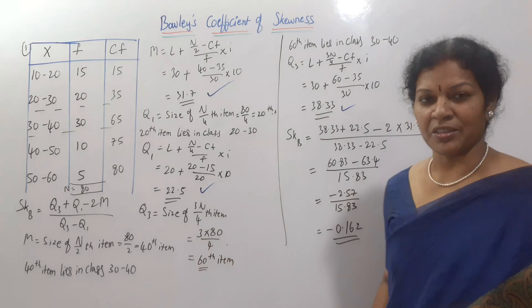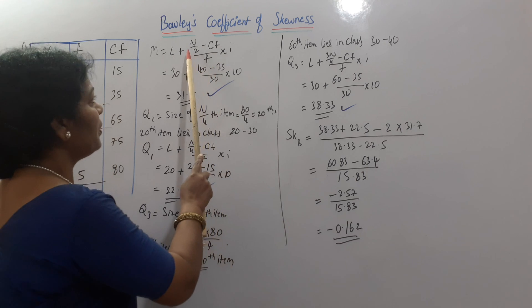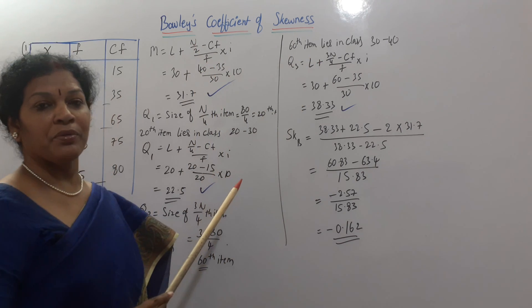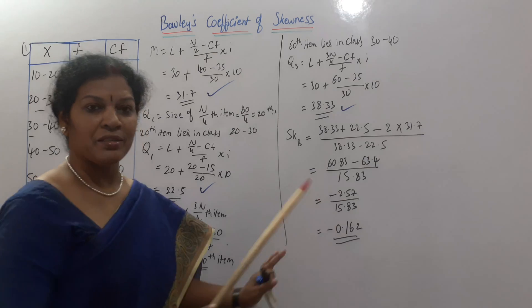So, this is 60th. And second formula. Second formula. Same one. Instead of N2, we have written 3N by 4. We got Q3. And applied in the formula. Lastly, I got the answer.